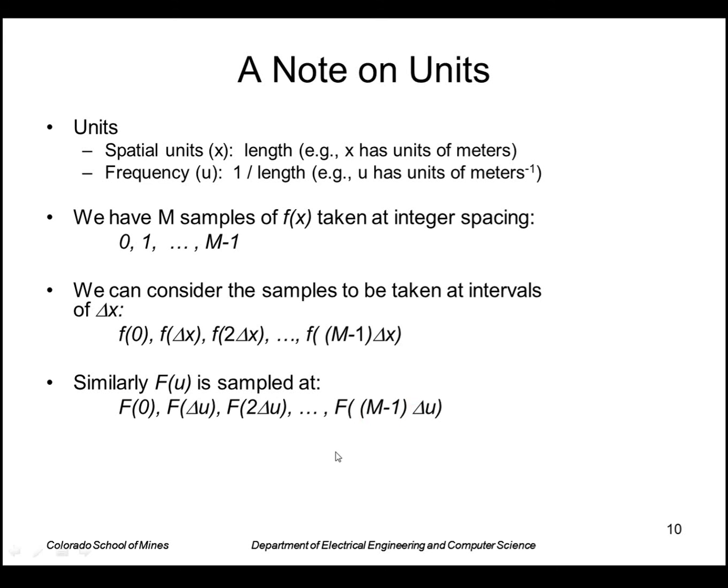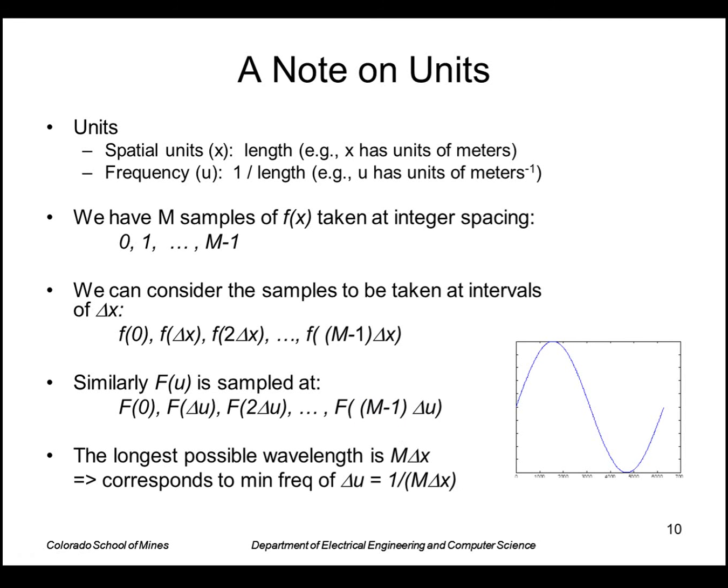So the lowest frequency, of course, is zero, it's f of zero, that's the DC term, but the lowest non-zero frequency is this one, f of delta u. The highest frequency, of course, would be this highest term here. So the longest possible wavelength we could have is where we have a complete repeating curve like a sine that would fit entirely within our m samples. So that represents the frequency delta u. So the frequency is just one over the wavelength, which is one over m delta x. So that can relate units of spatial sampling to frequency sampling.